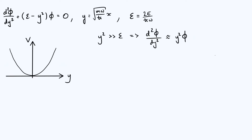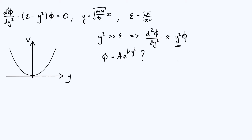Let's think about how to solve this approximate equation. If the y² term weren't there, we'd just have the second derivative of phi proportional to phi itself, which has exponential solutions. As a first guess, phi might be some exponential, but not as simple as without the y² term. Let's guess phi equals some constant A times e to the power ky. That can't work as written because it just gives the second derivative proportional to phi. So instead, let's try squaring the y — writing e to the ky² — since we have y² in the differential equation, and see what happens.